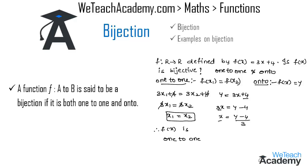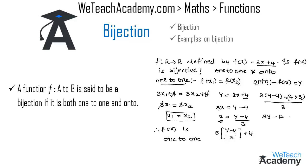Now replacing the value of x in f(x) = 3x + 4, we get 3 × (y − 4)/3 + 4. Taking LCM we get [3(y − 4) + 4×3] / 3. Multiplying out gives 3y − 12 + 12, all divided by 3. Here −12 and +12 cancel, leaving 3y / 3, and cancelling 3 in numerator and denominator gives f(x) = y.